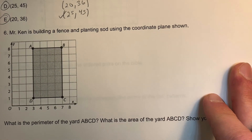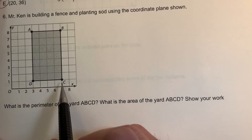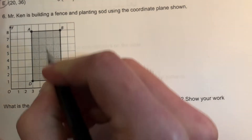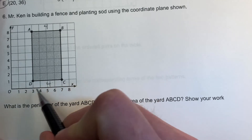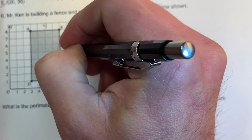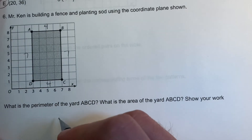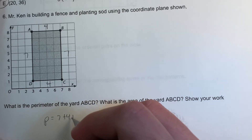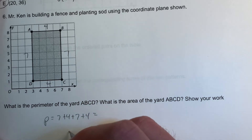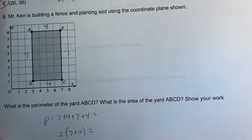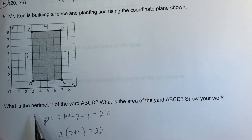Mr. Ken's building a fence and planning the side using the coordinate plane. What is the perimeter? First I need to find the distance from D to C — that's four units. The other side: B to C, seven minus three is four, eight minus one is seven. Perimeter equals 7 plus 4 plus 7 plus 4, or (7 plus 4) times 2 — that's 11 times 2 equals twenty-two.